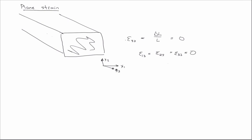The small strain tensor is always symmetric — it's defined as one-half times (grad u plus grad u transpose), which is by definition the symmetric part of grad u. Therefore, epsilon 3,1 and epsilon 3,2 are also zero by symmetry. That's the plane strain assumption. The Mohr's circle geometry for plane strain is identical to that for plane stress.